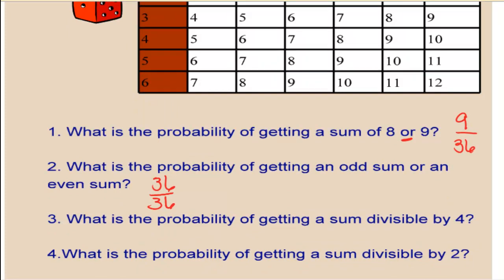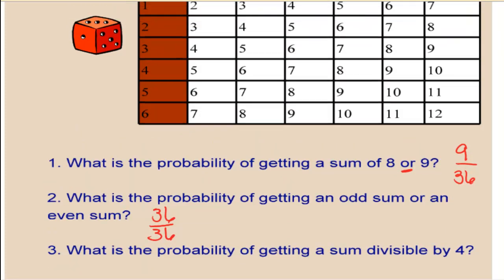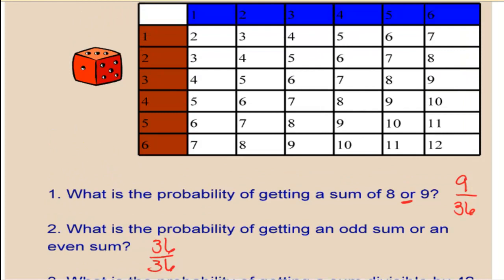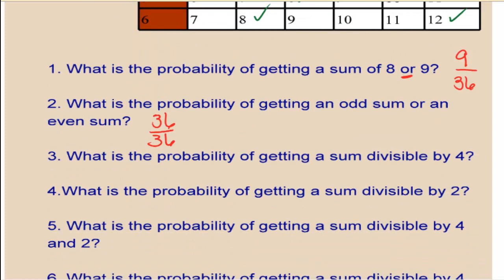What is the probability of getting a sum divisible by 4? Let's go through and look at these. We have 4 itself, we have 8, and we have 12. So that's 1, 2, 3, 4, 5, 6, 7, 8, 9 outcomes. 9 out of 36.